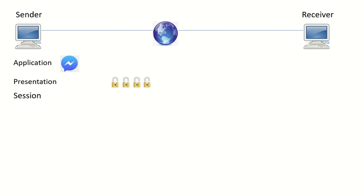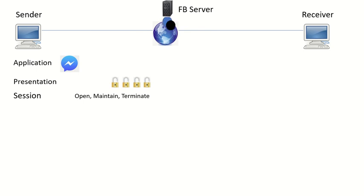The next layer after the Presentation Layer is the Session Layer. The Session Layer is responsible for opening, maintaining, and terminating a session. In this example, the sender logs in to Facebook — assuming they have the correct username and password, they are now connected to the Facebook server. The receiver is also logged into Facebook Messenger. The blue and black circles represent the sessions between the sender and the Facebook server, and the receiver and the Facebook server. At this point the Session Layer is simply maintaining the session.